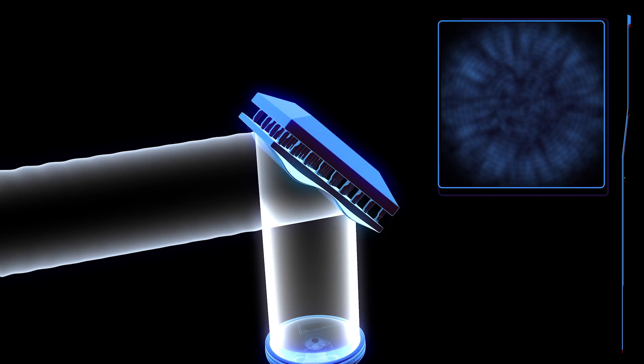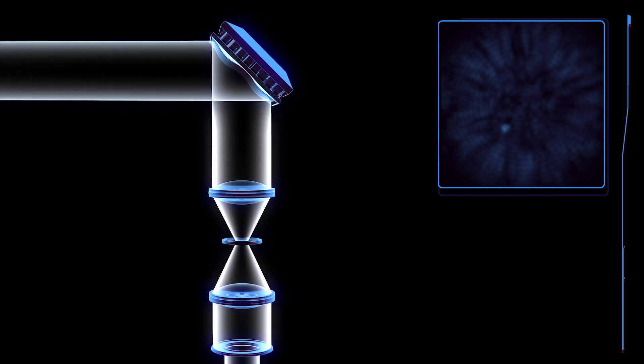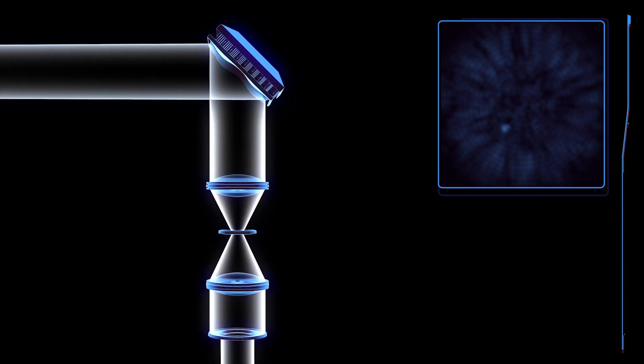As the mirrors deform, the blobs of light slowly begin to disappear, revealing brighter planets. Further adjustment brings fainter planets into view.